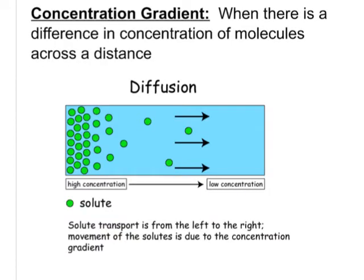Let's talk about a concept related to diffusion: the concentration gradient. A concentration gradient is simply when there is a difference in concentration of molecules across a distance. We have a high concentration on one side and a lower concentration on the other. The solute is transported from the high concentration area to the low concentration area — that's the definition of diffusion — and the movement of solutes is driven by this concentration gradient.